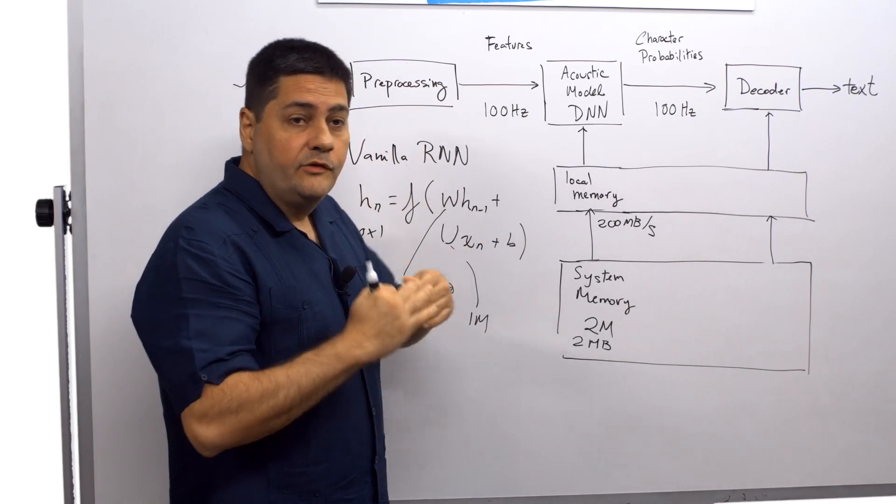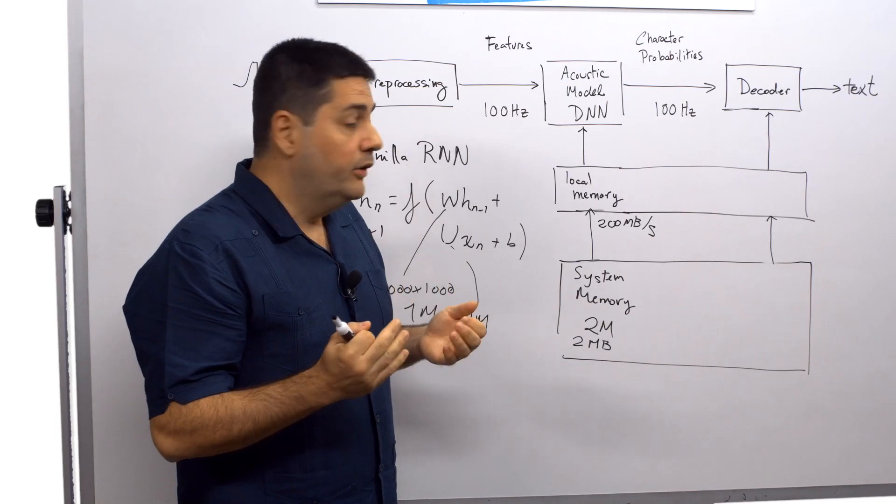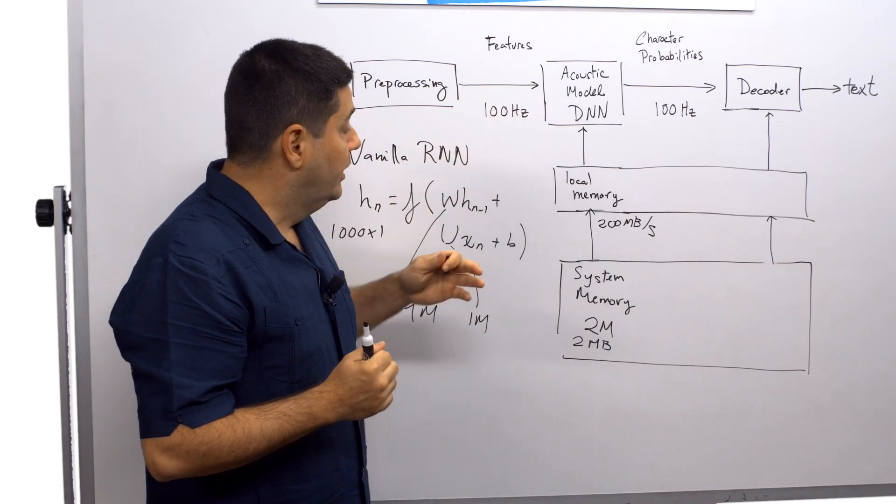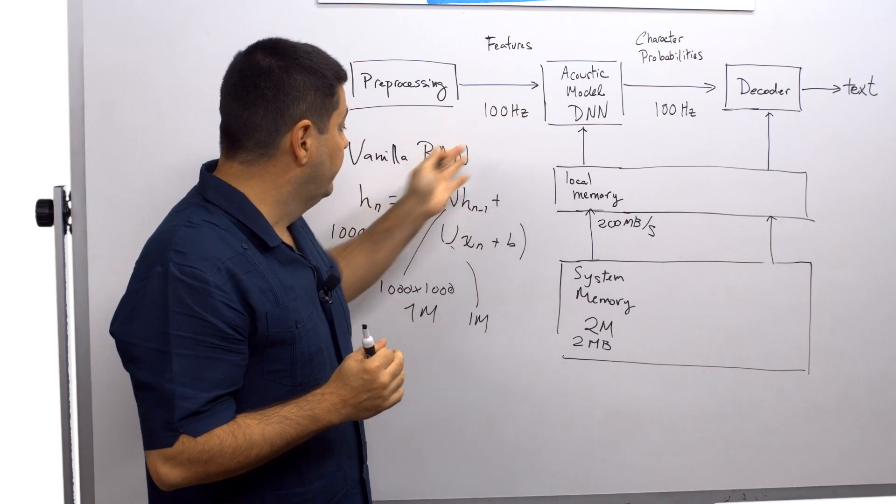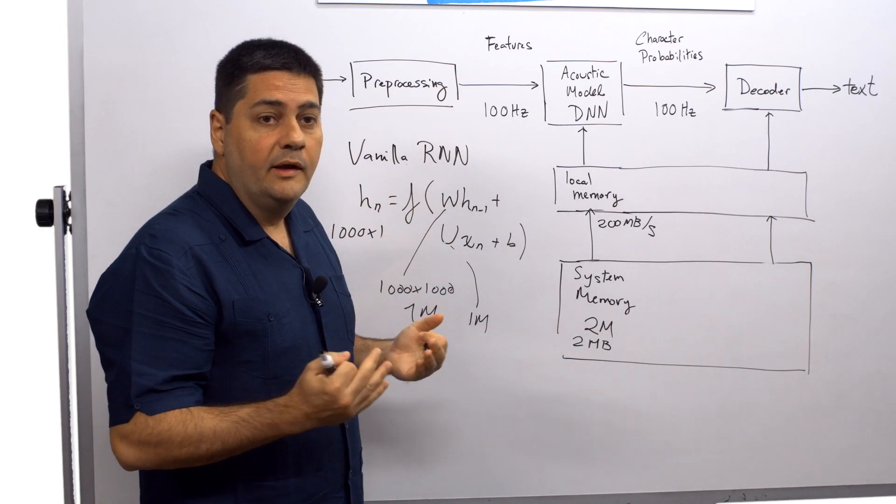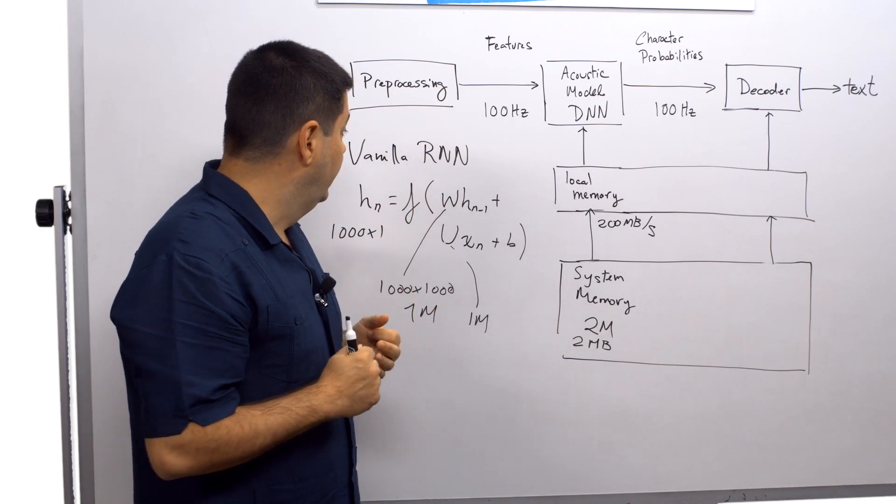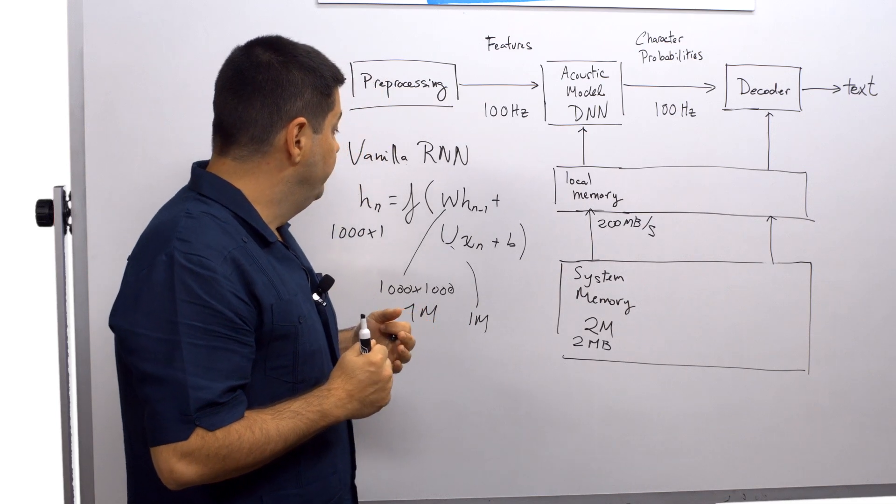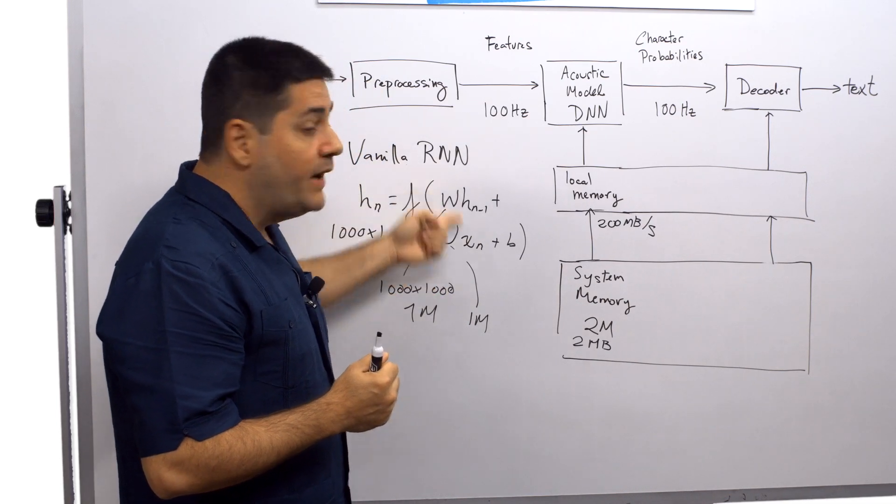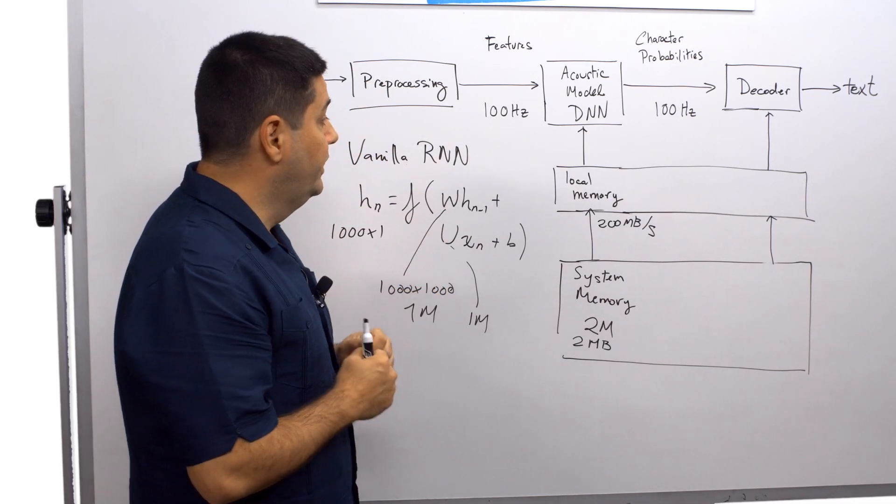Now, a vanilla RNN is a very simple recurrent neural network. In modern state-of-the-art systems, you wouldn't see a vanilla RNN. You would see something like an LSTM, a long short-term memory network. And those can have 5 times the complexity of a vanilla RNN.